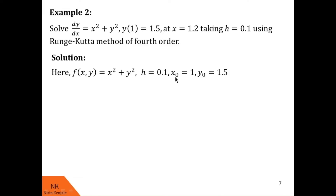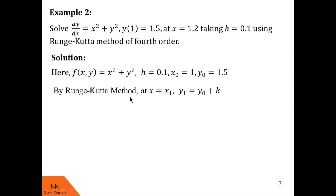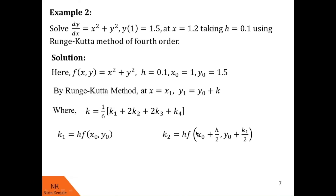Adding h to x₀ gives x₁ = 1.1, and adding h to x₁ gives x₂ = 1.2. We want to find the solution at x₂, but we cannot find it directly. So we first find the solution at x₁, then repeat the process to find the solution at x₂. According to Runge-Kutta method, at x = x₁, y₁ = y₀ + k, where the formulas of k₁, k₂, k₃, k₄ are as given.